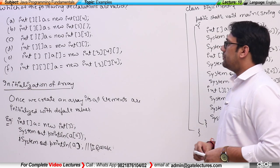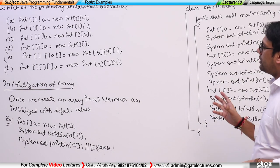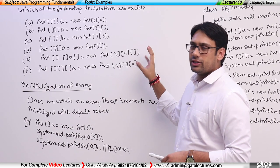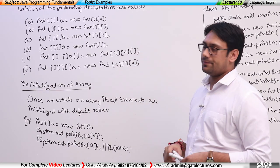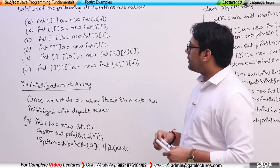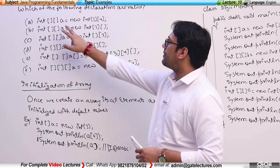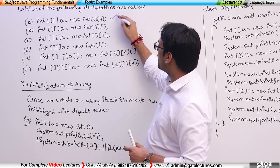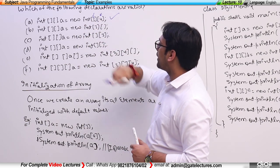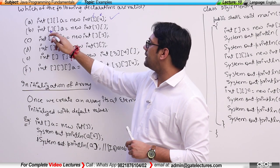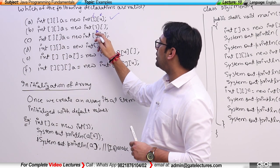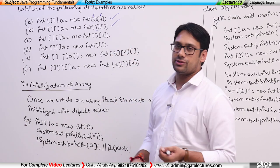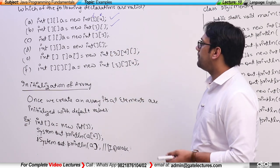Let's see which declarations are valid and which are invalid. The first case: int[][] a = new int[3][4] — this is valid because the sizes are specified. The next case: int[][] a = new int[3] — only one size is specified but this is also valid; there will be no compile-time error.